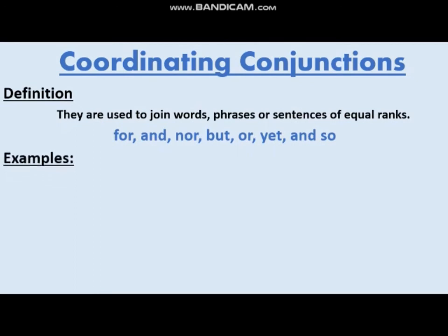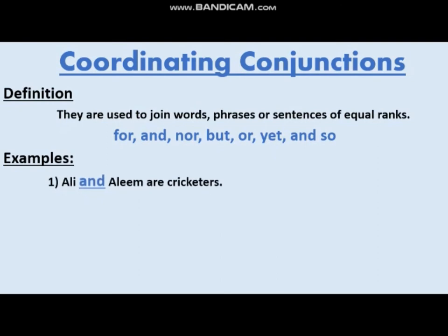'Ali and Mark are cricketers' — Ali and Mark are two nouns joined with the help of 'and,' so 'and' is a coordinating conjunction of equal rank. 'Sleep now or you will miss the class tomorrow' — 'or' is a coordinating conjunction that joins two clauses and shows choice, meaning the subject has one choice to take from the given options.